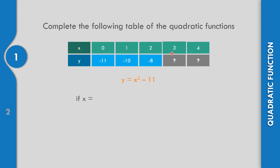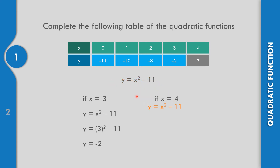Let us solve if x equals 3. Replace into the formula: y equals 3 squared minus 11. That is 3 times 3 equals 9, minus 11. Subtract — that is equal to negative 2. Let us replace x by 4: y equals x squared minus 11, so y equals 4 squared minus 11. That is 4 times 4 equals 16, minus 11. Y equals 5.